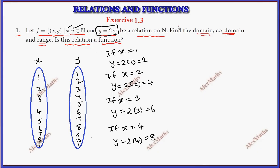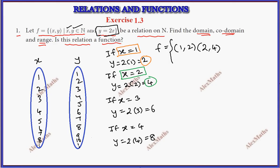With these values, we have the relation as a set of ordered pairs: (1, 2), (2, 4), (3, 6), (4, 8), (5, 10), and so on.